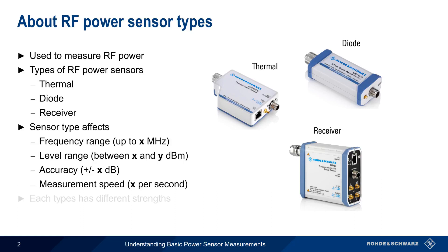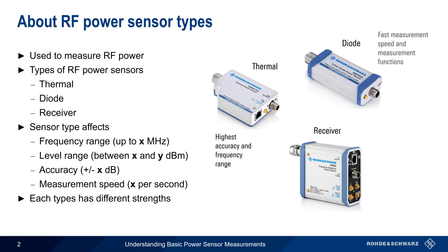Each power sensor type has different strengths or weaknesses. For example, we find the highest accuracy in thermal sensors, fast speed and many statistics and measurement functions in diode sensors, and very wide level range and frequency selectivity in receiver-based sensors.